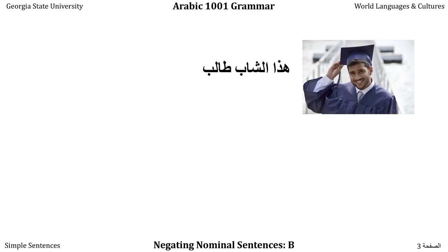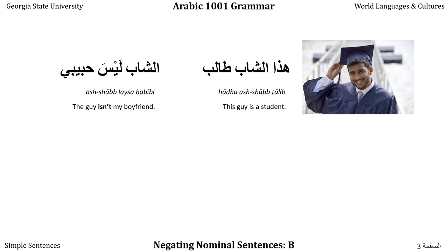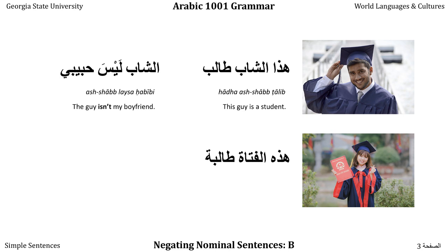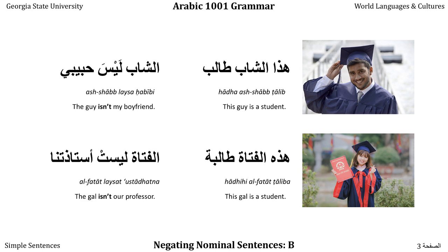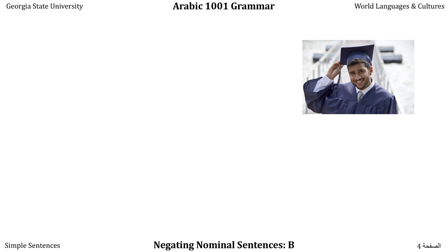In the last lesson, we learned to use the verb Leysa. We can transform 'Hatha Ashab Talib' — this guy is a student — into 'Ashab Leysa Habibi' — the guy isn't my boyfriend — where Leysa is our verb for 'isn't.' For a woman, we say 'Hatha Hil Fatat Talibah' — this young woman is a student — and 'Al Fatat Leysat Ustadatna' — the gal isn't our professor — where we change Leysa to Leysat because we are talking about a woman. In this lesson we talk about how Leysa modifies the Chabar, or predicate, the second half of the sentence.